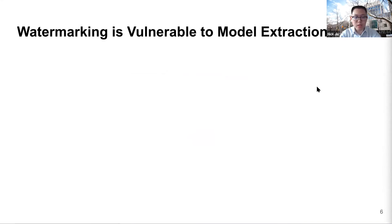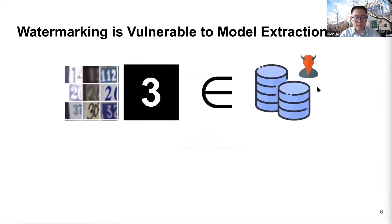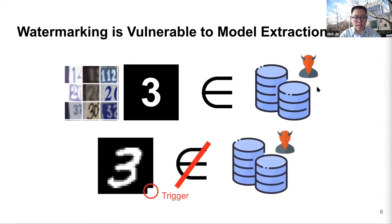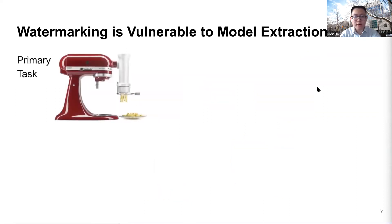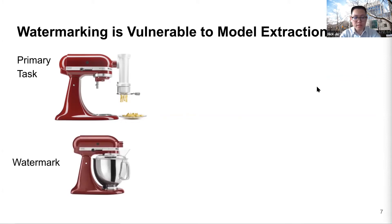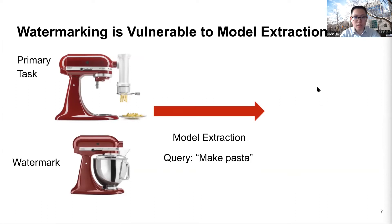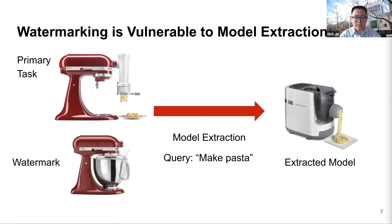Watermarking has been shown effective when the exact model parameters are stolen. However, it is vulnerable to model extraction attack. The adversary doesn't have access to the training data, so they need to synthesize or collect public data to construct a new training set. The problem is that the watermarked data is highly unlikely to be part of the adversary's training set by construction, because it is custom-designed by the model owner and should not be revealed to the public. To illustrate, imagine the model is trained to make pasta. Watermarking is the secondary task of the model, represented by the mixer. Querying this model with a dataset without the watermarked data is the same as only observing the machine making pasta but not mixing. The data activating the two functionalities are disentangled — data activating one task does not activate the other. Therefore, the extracted model will only learn the pasta-making task but not the watermark.